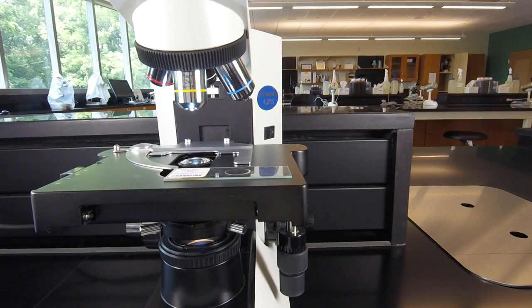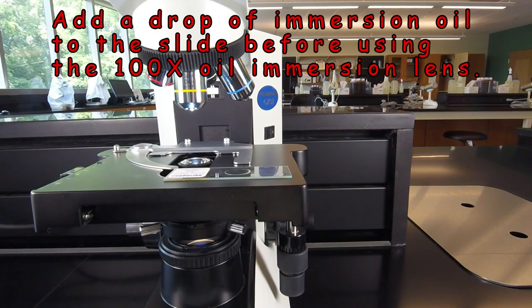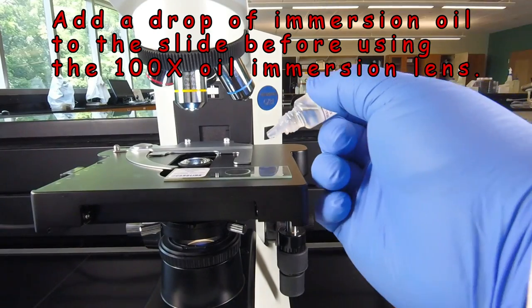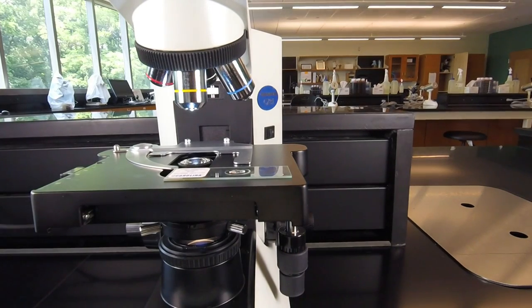Then since we're going to be using oil immersion microscopy or a thousand magnification, whenever we're using a thousand magnification, we have to put a nice sized drop of immersion oil where you're going to be viewing the slide. So you let a nice round drop fall like that.